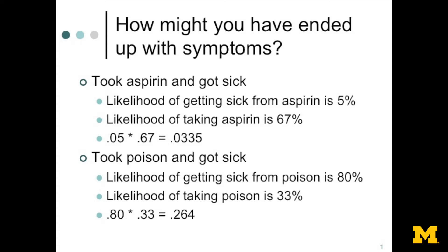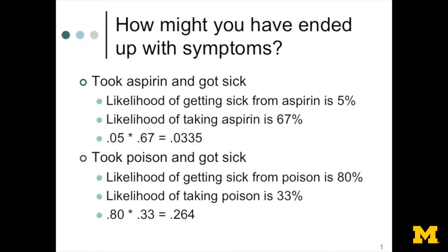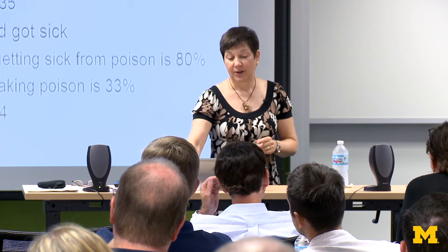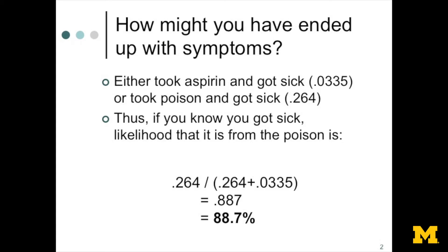How could you have ended up with symptoms? One way is you took the aspirin and got sick. The likelihood of getting sick from the aspirin was 5%, even though the likelihood of taking the aspirin was two-thirds, or 67%. So 5% times 67% is about 3% — a 3% likelihood you would get sick from the aspirin. On the other hand, if you took the poison and got sick: the likelihood of getting sick from poison is 80%, and the likelihood of taking the poison is 33%, which gives 26%. So the total ways you could have had symptoms: aspirin path is roughly 3%, poison path is 26%.